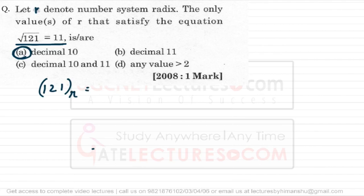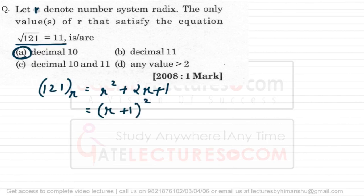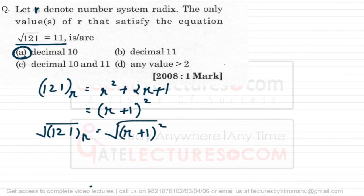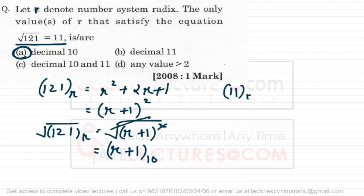Just look at the procedure for solving this. Suppose 121 is a number in base r. Convert it into decimal by multiplying with the positional weights: you get r squared plus 2r plus 1, which can be written as (r+1) squared. So the square root of 121 in base r equals the square root of (r+1) squared, which simplifies to r+1 in base 10. The RHS, 11 in base r, also equals r+1 in base 10.